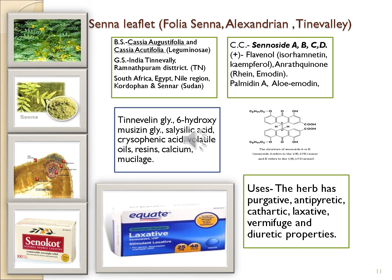It is also cultivated in South Africa, Egypt, the Nile region, and the Senna region. Active chemical constituents of senna include sennoside A, B, C, and D, flavanols, anthraquinone glycosides, rhein, emodin, kaempferin A, and aloe-emodin. Other chemical components are Tinnevelly glycoside, 6-hydroxymusizin glycoside, salicylic acid, chrysophanic acid, volatile oils, resins, calcium, and mucinase. The structure depicted is of sennoside A.